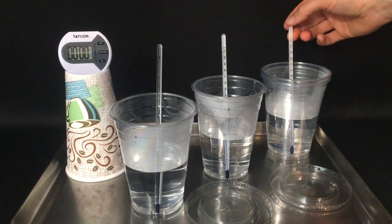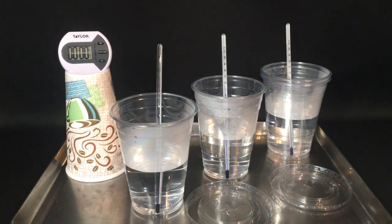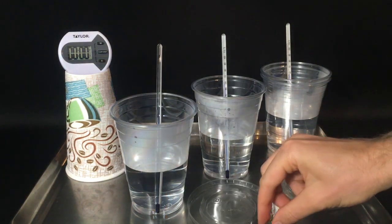We know that the first thermometer, the thermometer on the left, is three degrees off. So, we'll need to add three degrees to its temperature. And then the other two are correct.